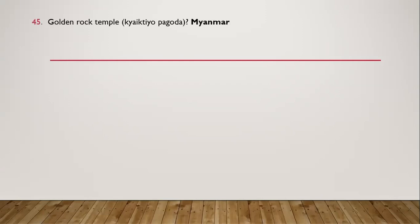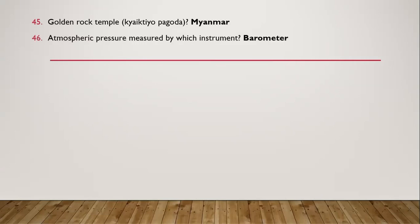Question 45: Golden Rock Temple — it is in Myanmar. Question 46: Atmospheric pressure is measured by which instrument? The instrument is a barometer.